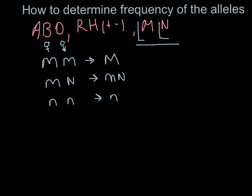For example, if we take a group of students and take samples from them, for example we get 392 people have a group M